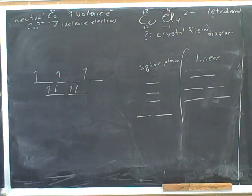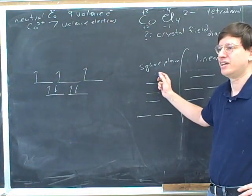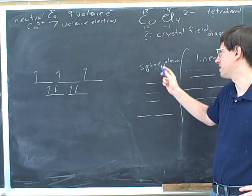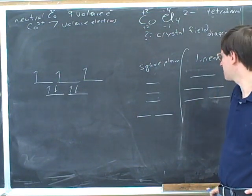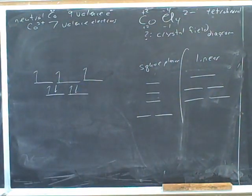Because in both the square planar and the linear, it's possible for the d orbitals to be pointing directly at the ligands. You can be pointing directly at the ligands in square planar or in the linear. So I would expect a fairly big energy difference between some of these.